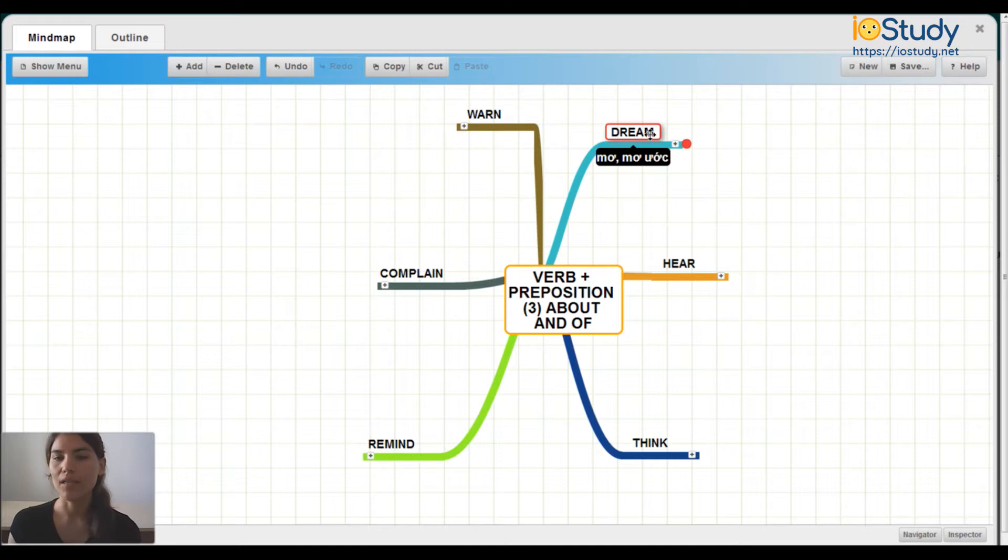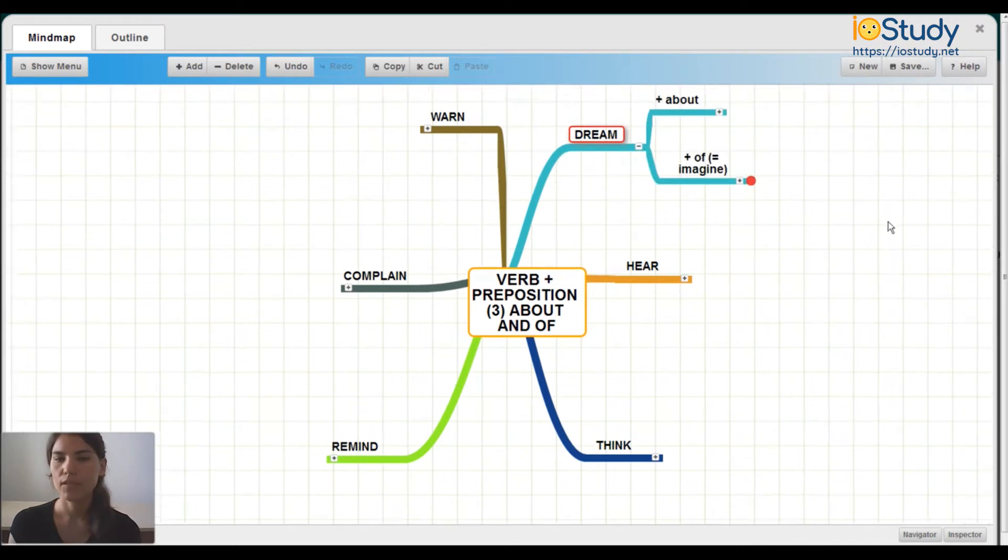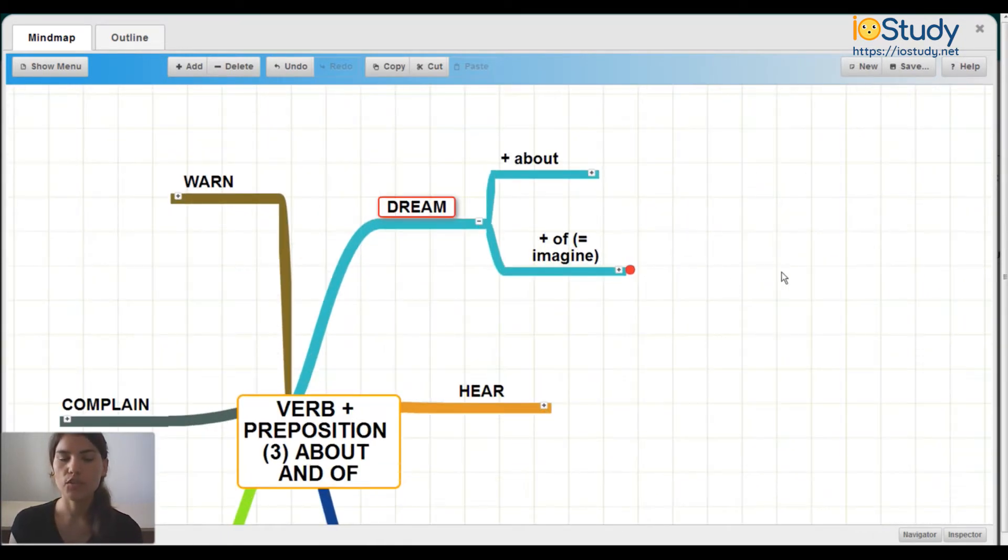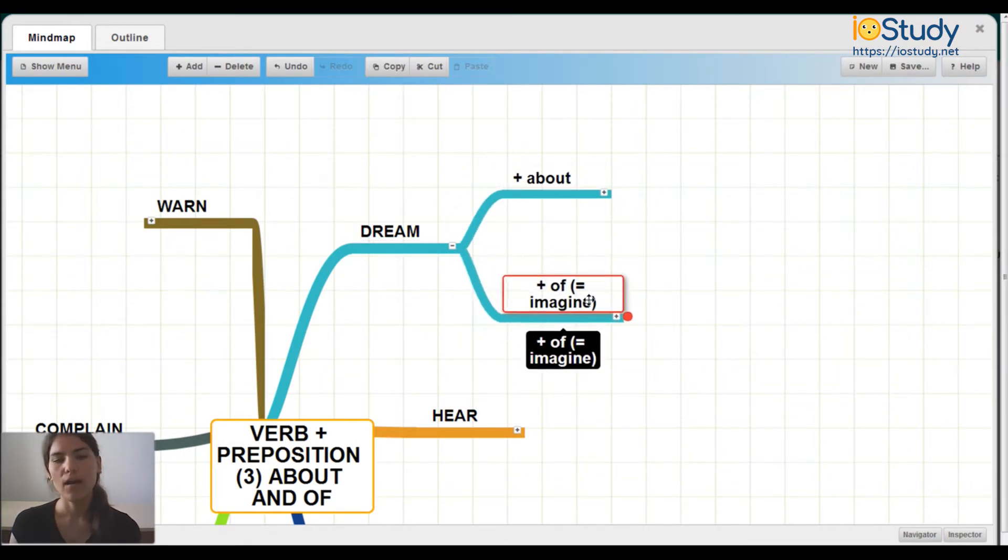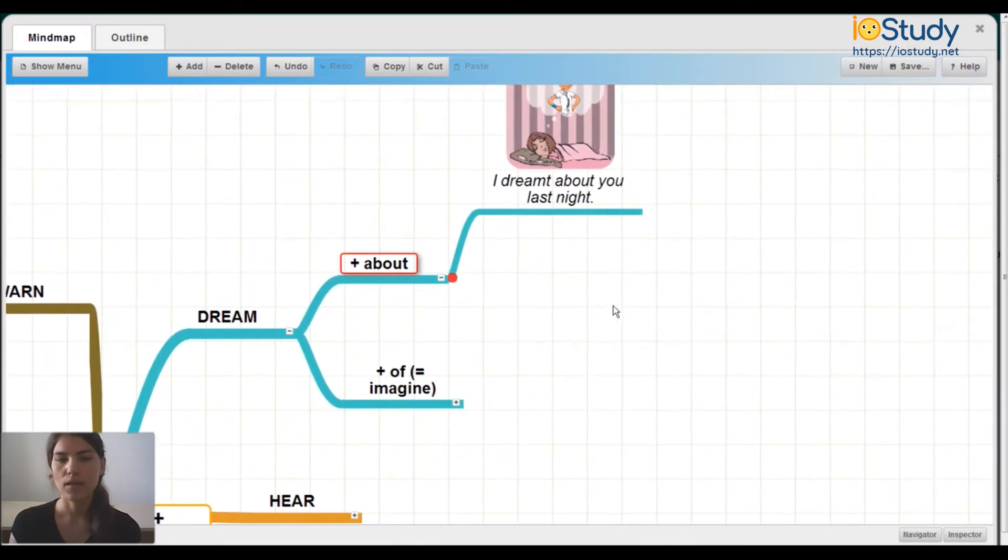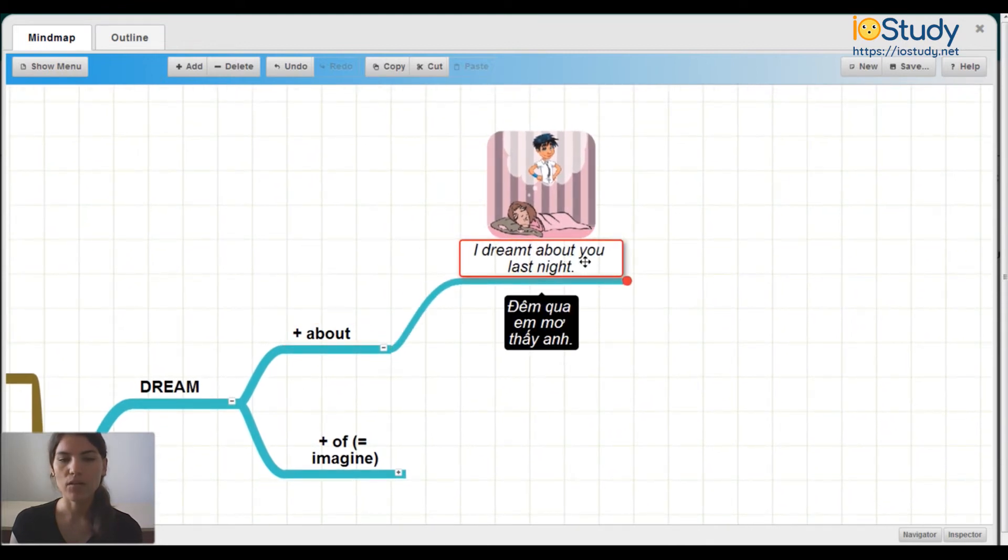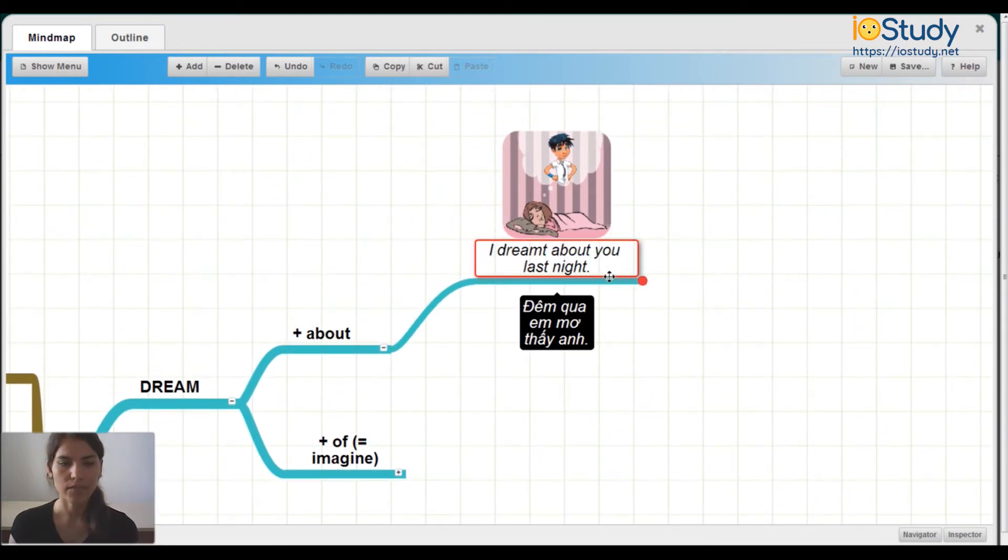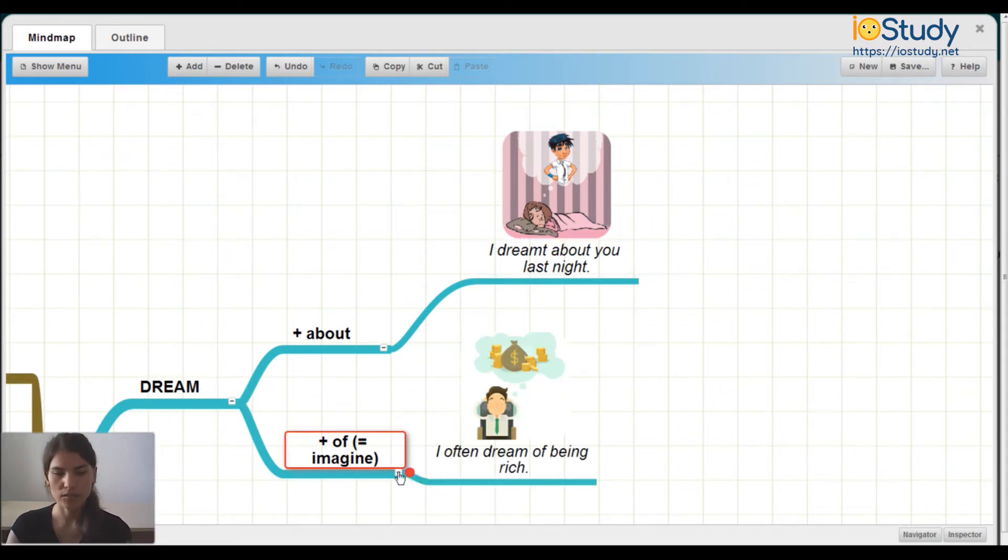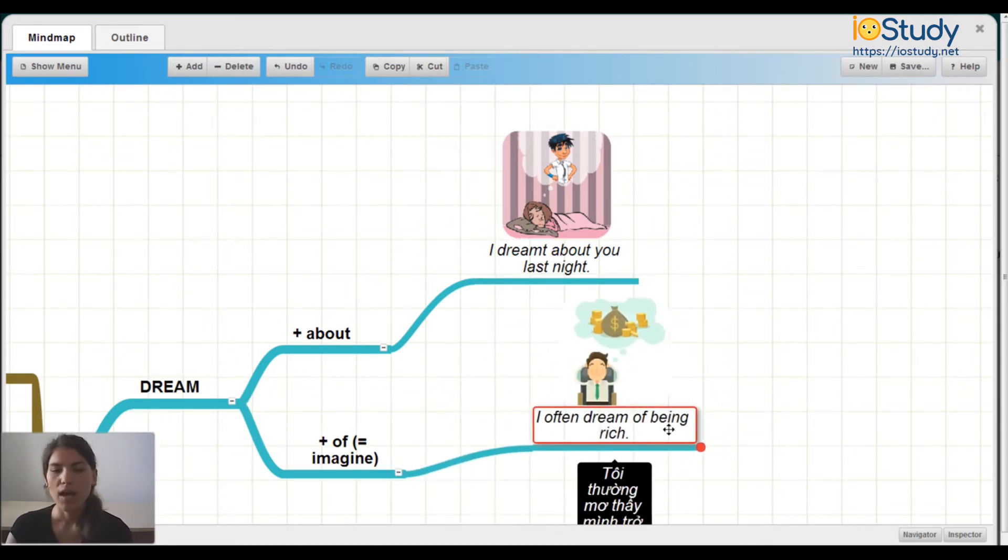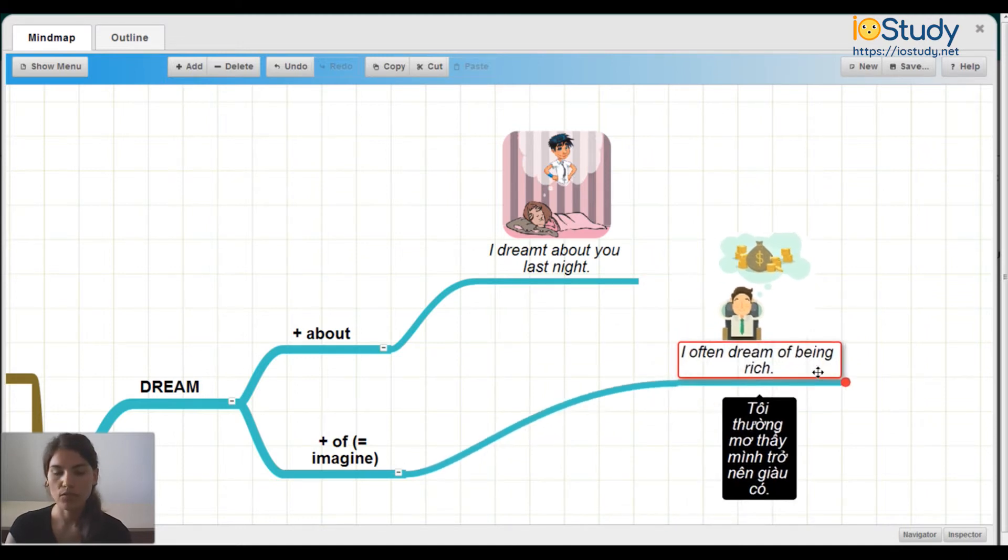Let's first talk about dream. From dream we add about and we can add of, which means imagine. Dream about, for example, I dreamt about you last night. Dream of means imagine. For example, I often dream of being rich. This means imagine.